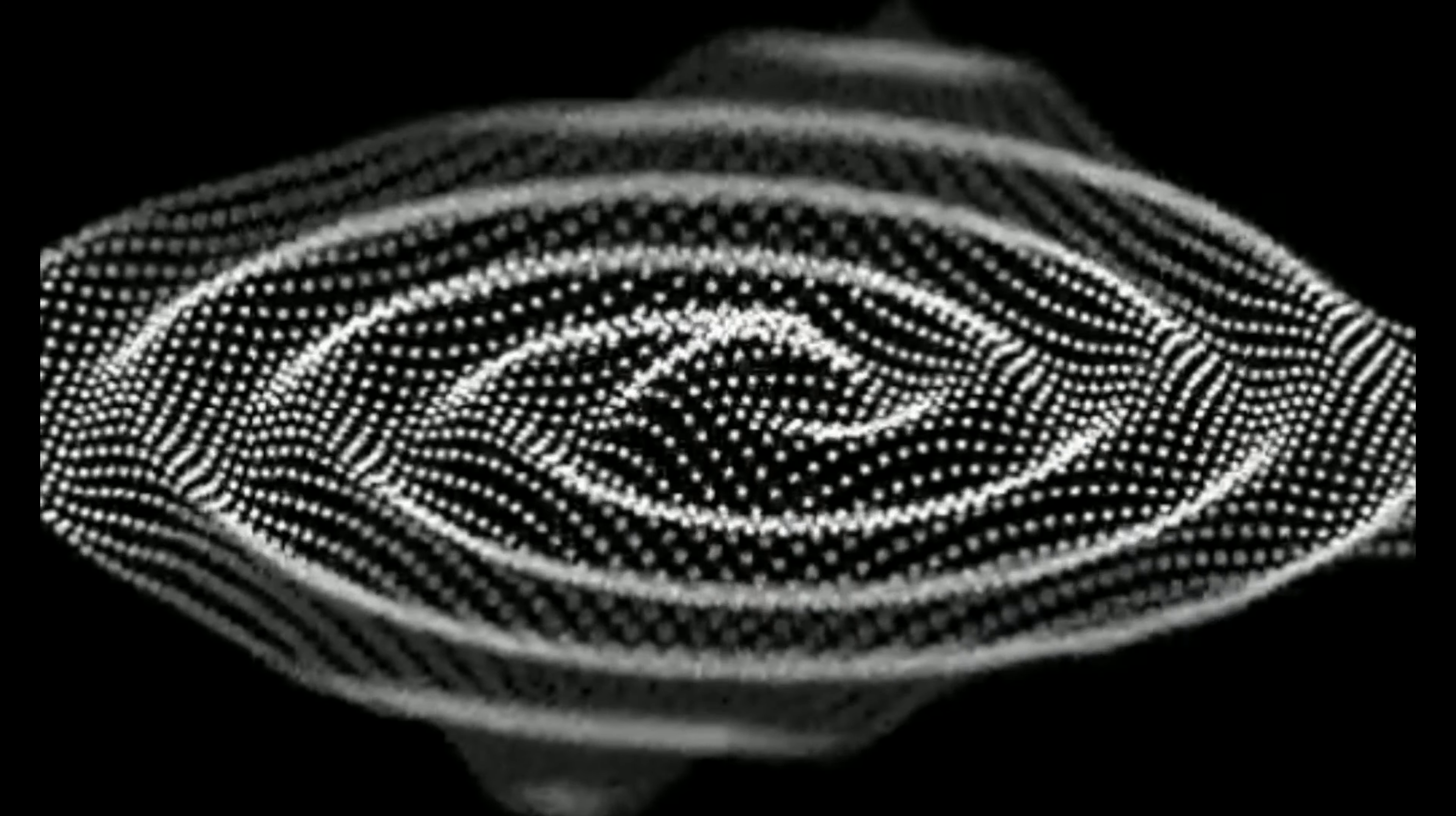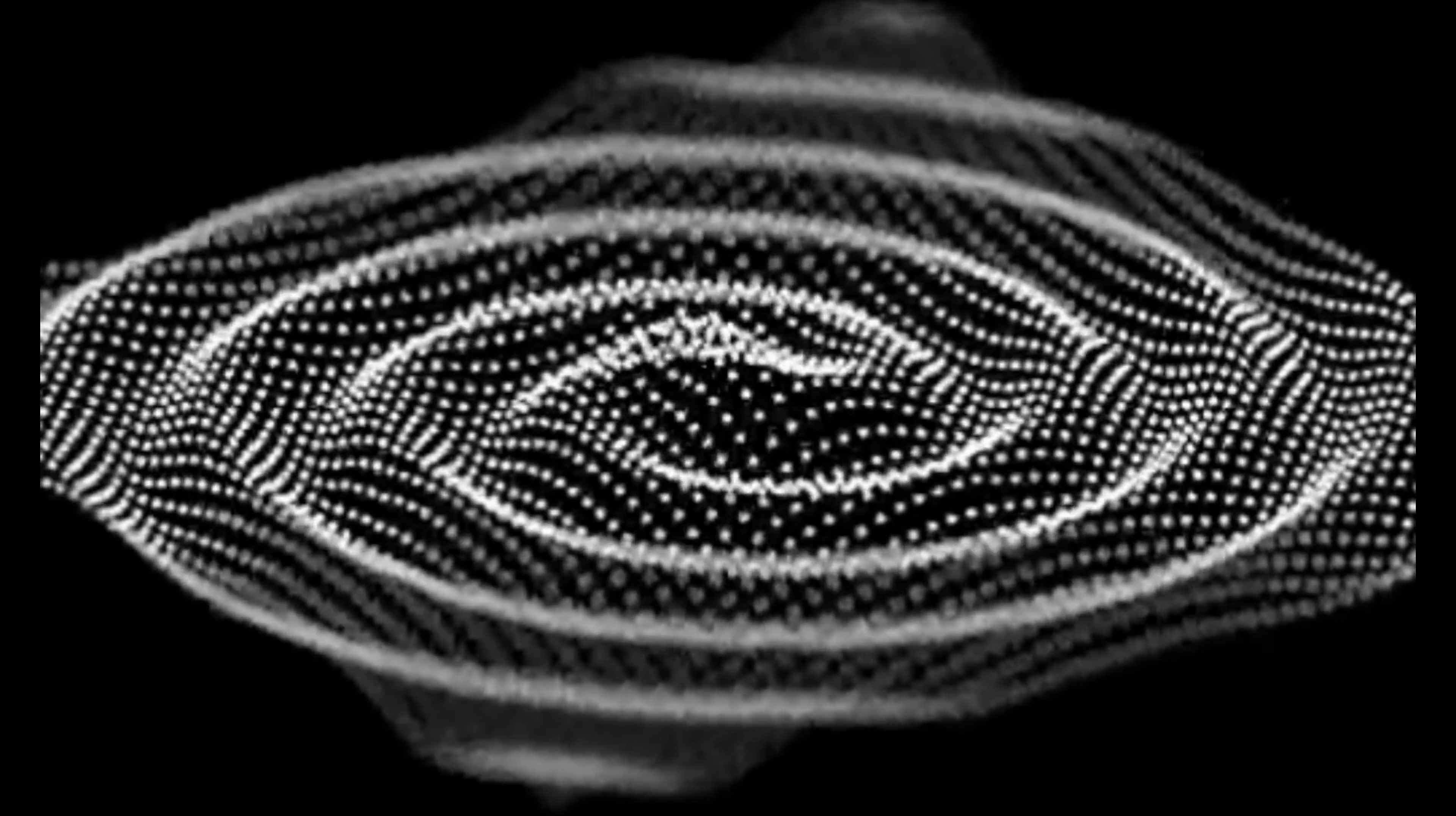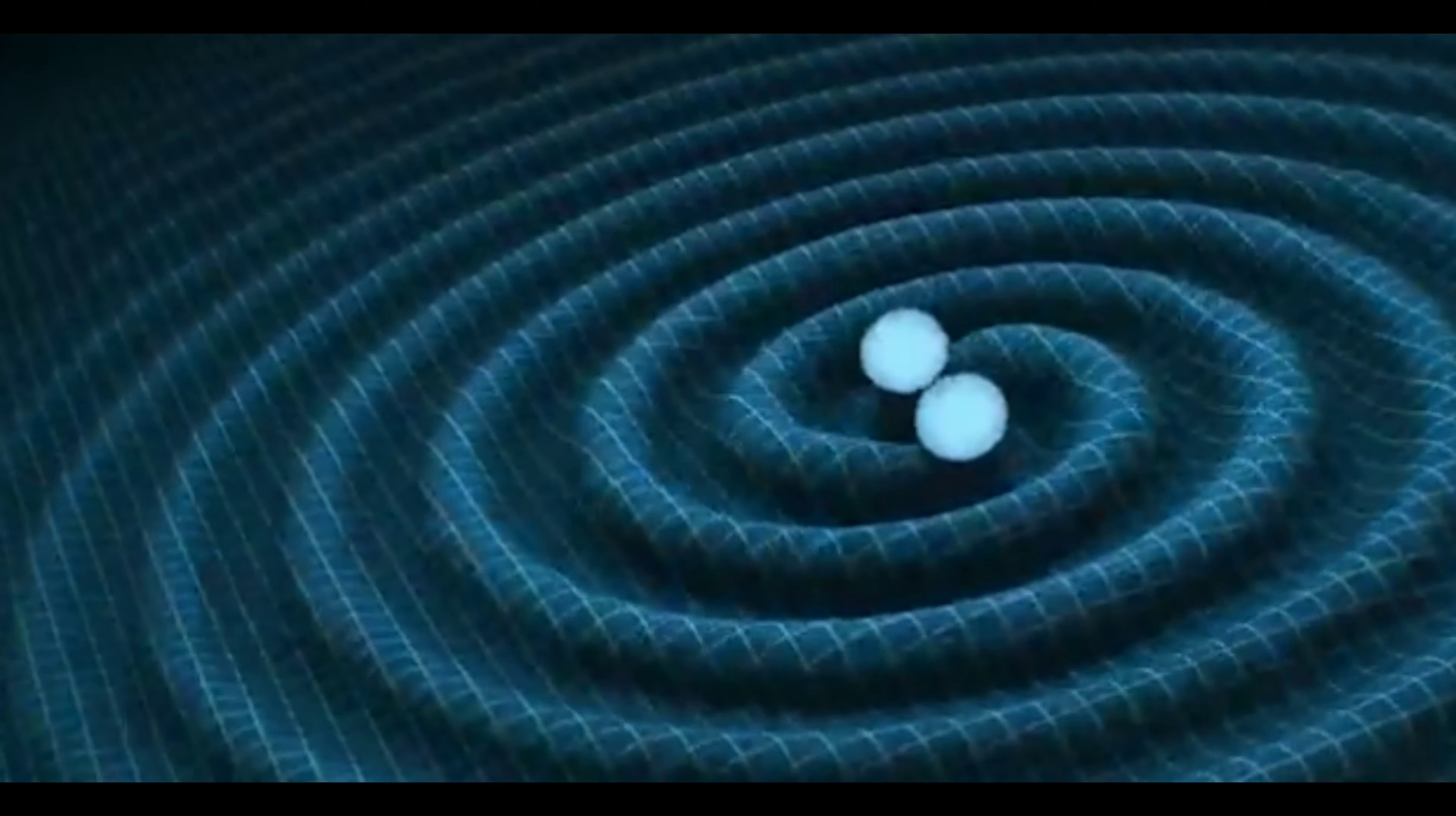If only one object moves around in space-time, then the amplitude of ripples would be very small. But if two massive objects orbit each other, then they would create more effective ripples in space-time.